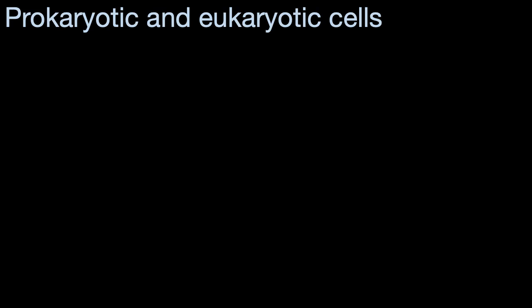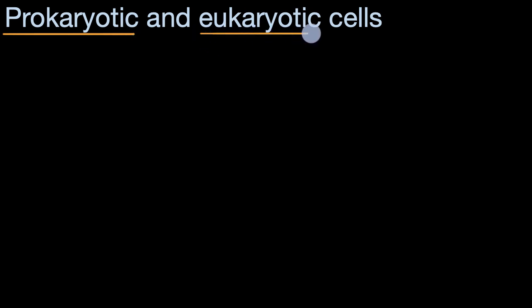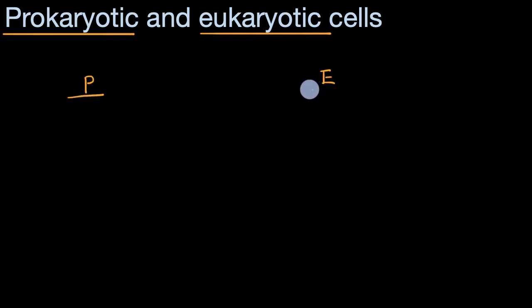In other videos, we talk about how cells are the basic building block of life. In this video, we're now going to talk about the two main categories of cells: prokaryotic cells and eukaryotic cells. What I'm going to do here is diagram out a prokaryotic cell and a eukaryotic one, and we're going to see both the similarities and differences.